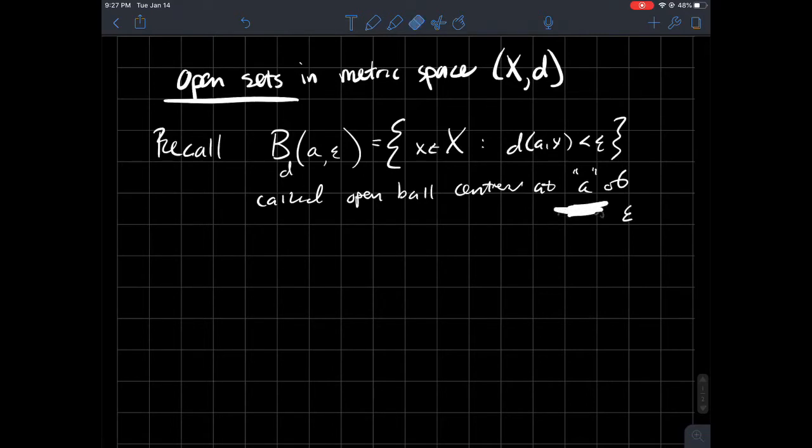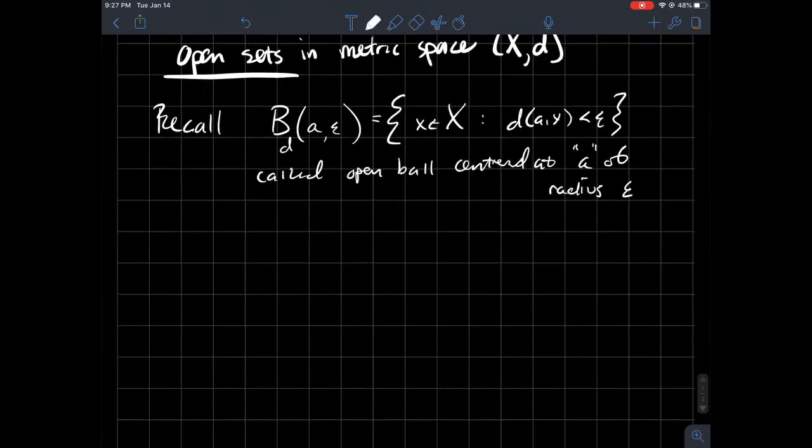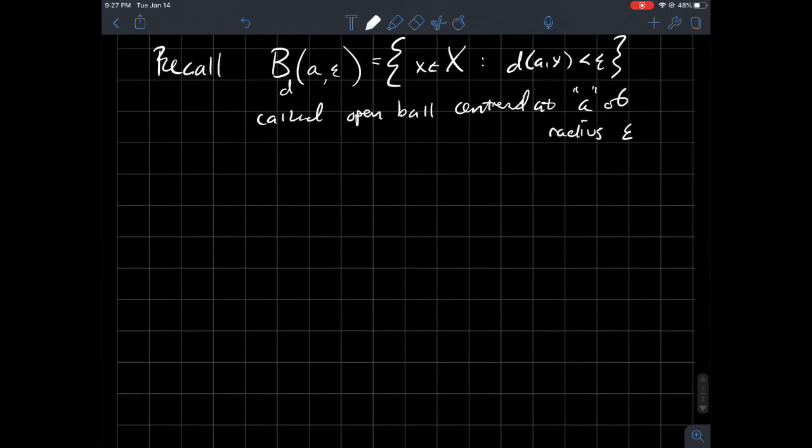It's called an epsilon ball, or I'll just say an open ball centered at A of radius epsilon. And so what we want to try to do then is define what is just an open set in a metric space.